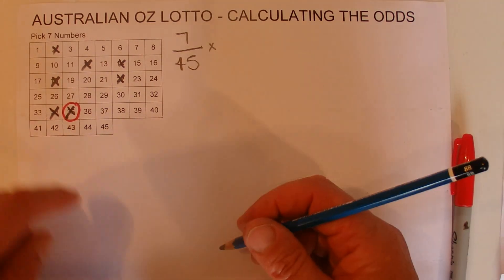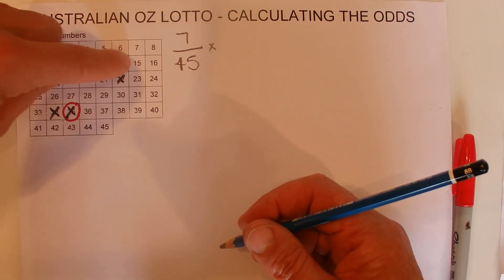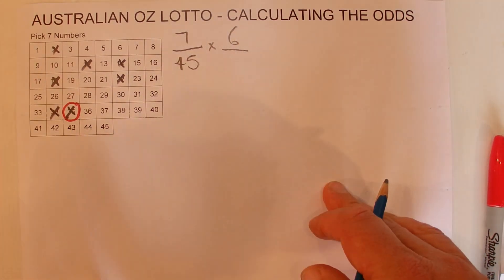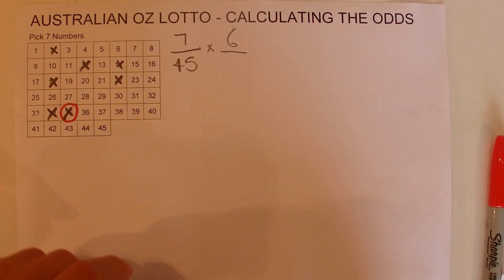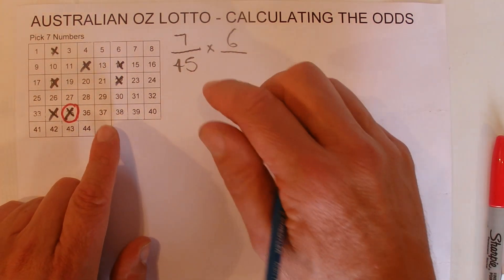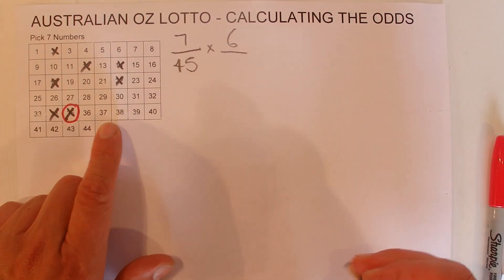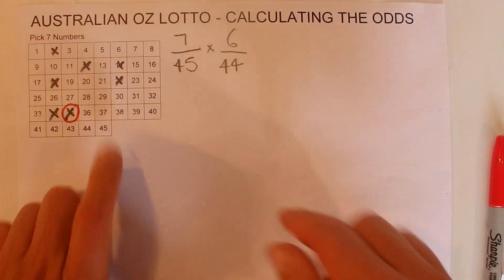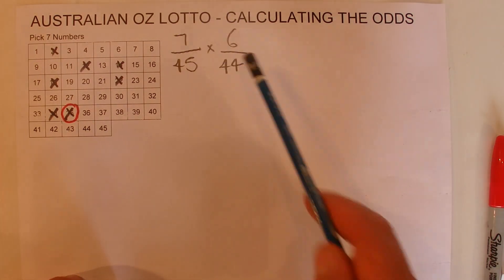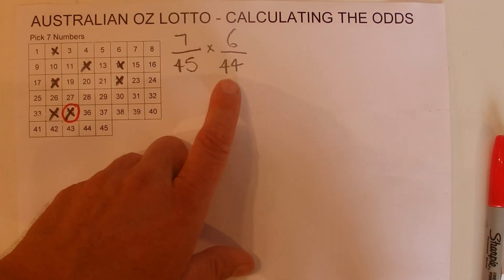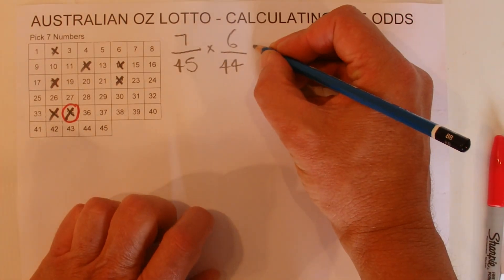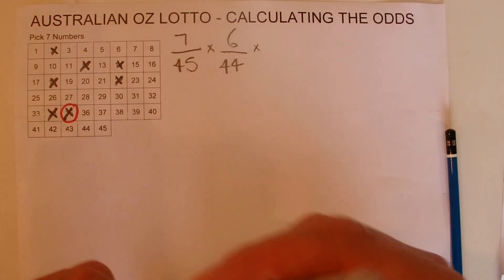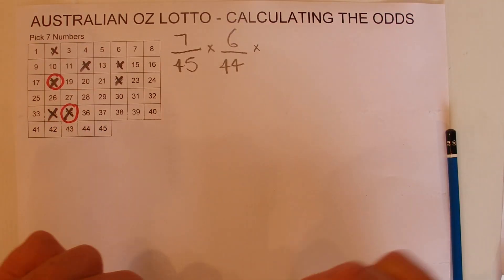When the second number is drawn, you're left with six chances of matching the second number that's drawn. Now because one ball has already been drawn out of the barrel, there are actually only 44 numbers left in the barrel just before that second number is drawn. I'm going to multiply all these fractions out eventually.